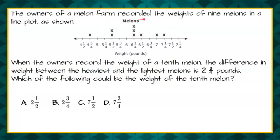The owners of a melon farm recorded the weight of nine melons in a line plot as shown. So here are our nine melons in their line plot. When the owners record the weight of a tenth melon, the difference in the weight between the heaviest and the lightest melons is two and three-fourths pounds. Which of the following could be the weight of the tenth melon? And here are your four choices.